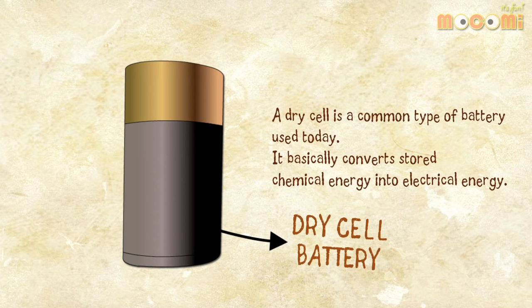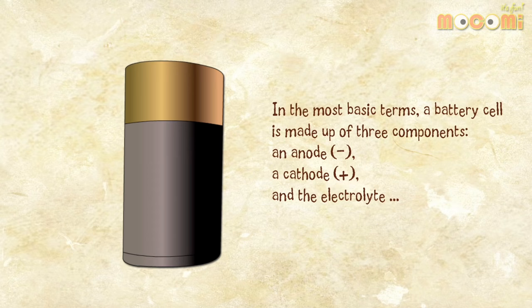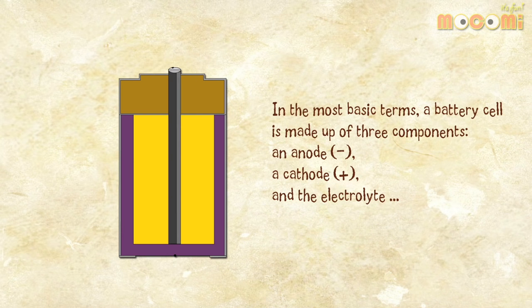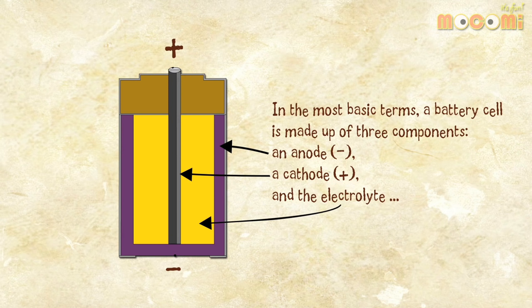A dry cell is a common type of battery used today. It basically converts stored chemical energy into electrical energy. In the most basic terms, a battery cell is made up of three components: an anode, a cathode, and the electrolyte.